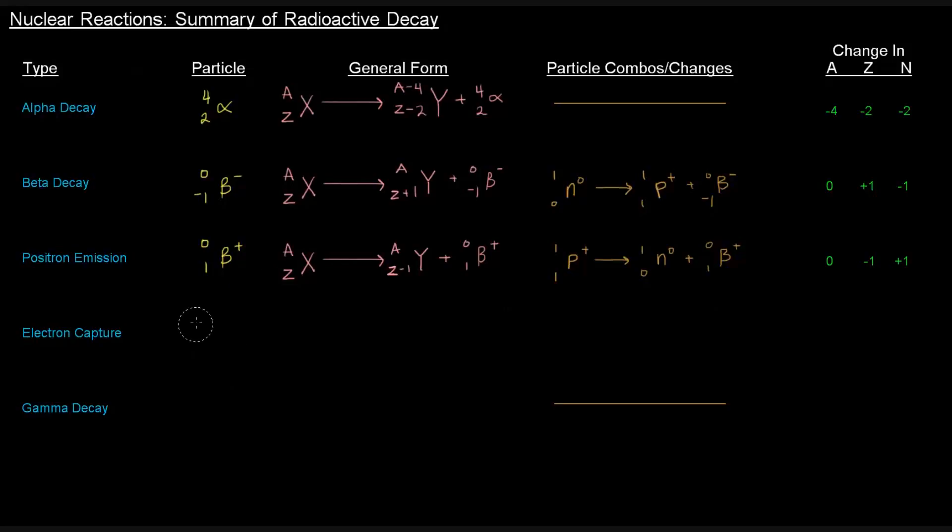With electron capture, we've got an electron, which is basically identical to a beta particle. Electron capture is the only one with the particle on the left side of the general form. We have AZX plus this electron to give a resulting nucleus with the same mass number and the Z decreasing by 1. One proton and one electron come together to make one neutron.